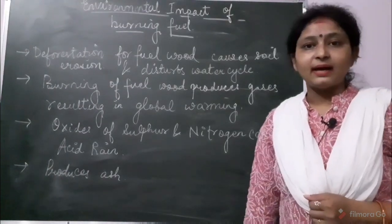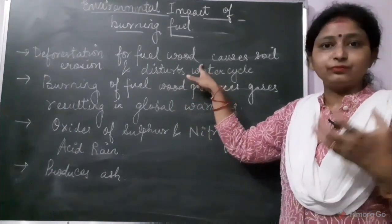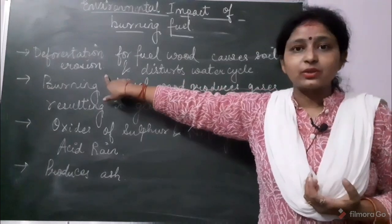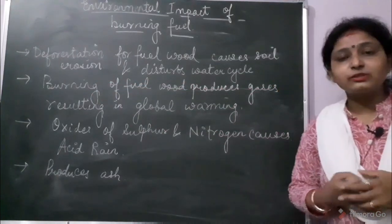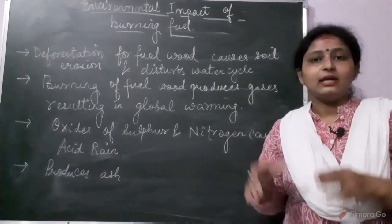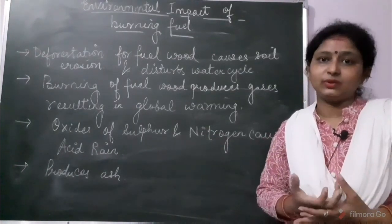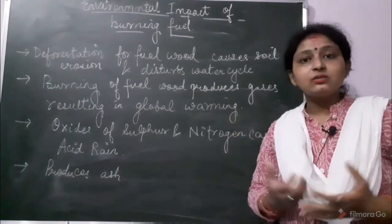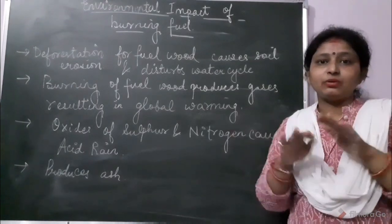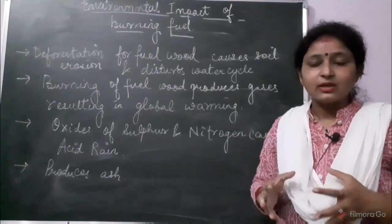Now let's see the environmental impact of burning fuel wood. Deforestation is done to obtain wood that can be used as fuel. This causes soil erosion, because the roots of trees are responsible for holding the soil. When we cut the trees, the soil loosens and soil erosion occurs. Soil erosion is the removal of the top fertile layer of the soil.